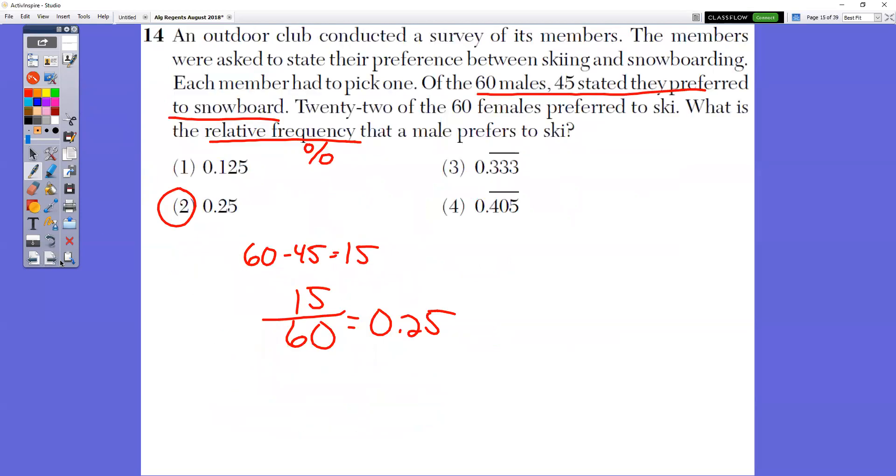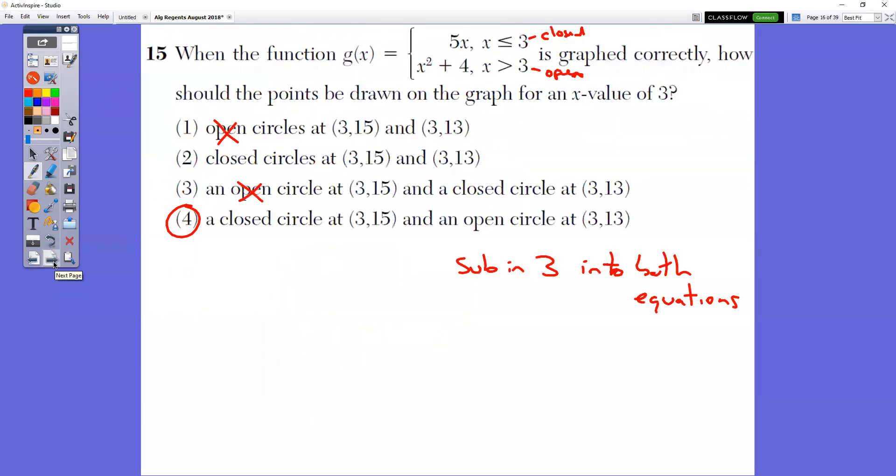In question number 14, an outdoor club conducted a survey of the 60 males, 45 stated that they prefer to snowboard. What is the relative frequency of those that prefer to ski? So that tells you how many like snowboarding, but the remaining people are the number that like to ski. So the first thing that you need to do is subtract 60 people minus the 45 snowboarders gives you 15 skiers, 15 skiers out of the total of 60 top divided by bottom is 0.25 or 25%.